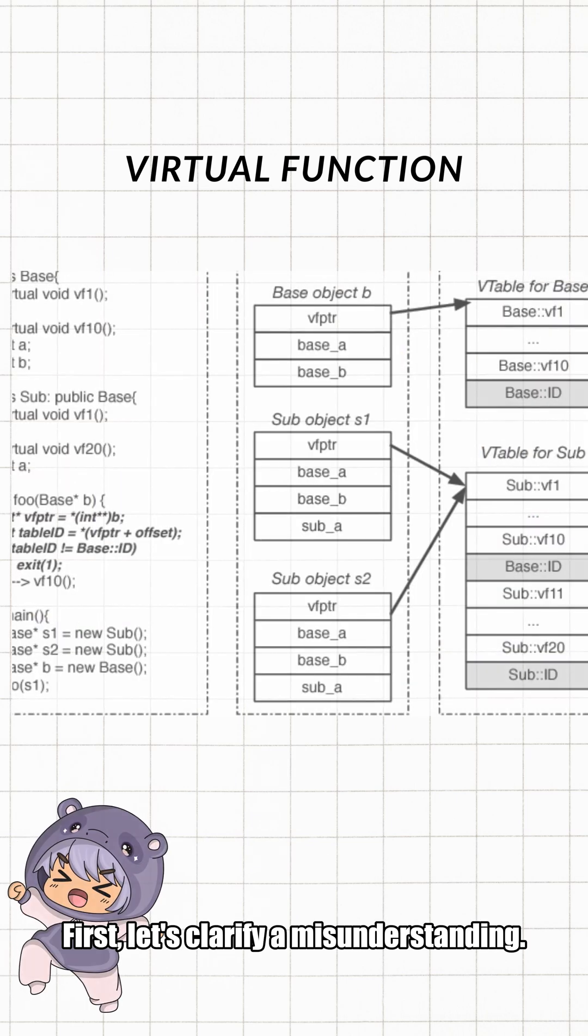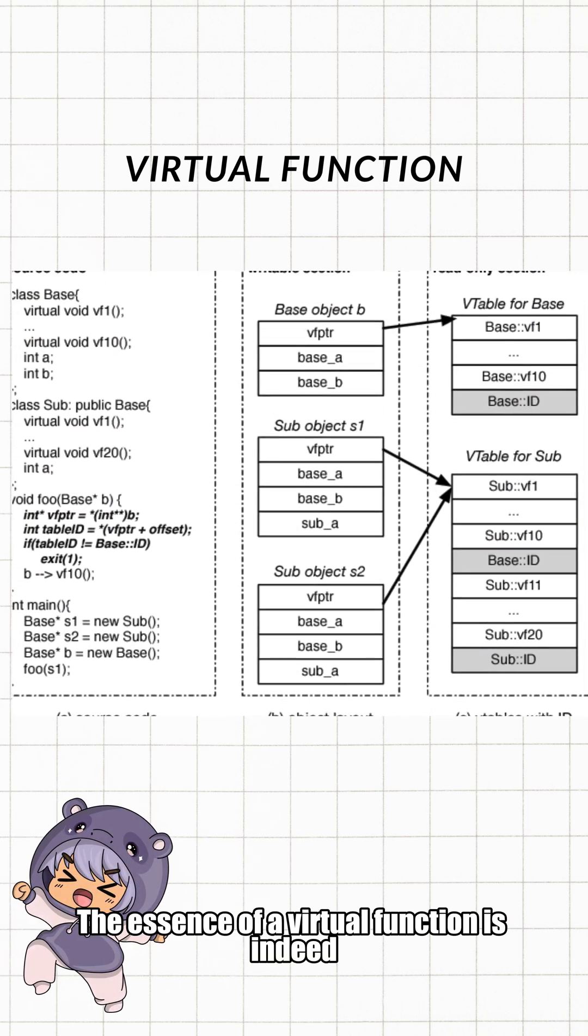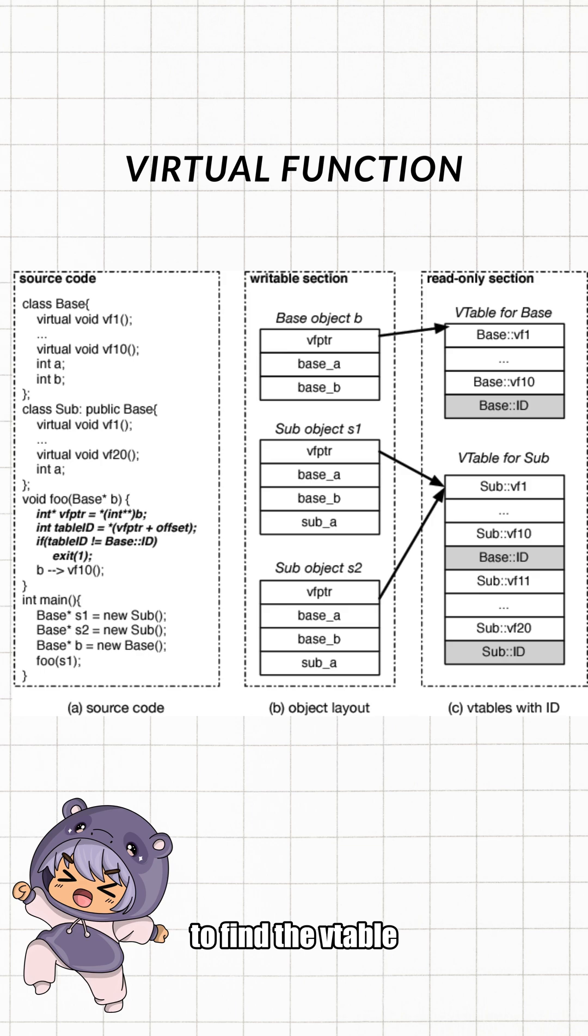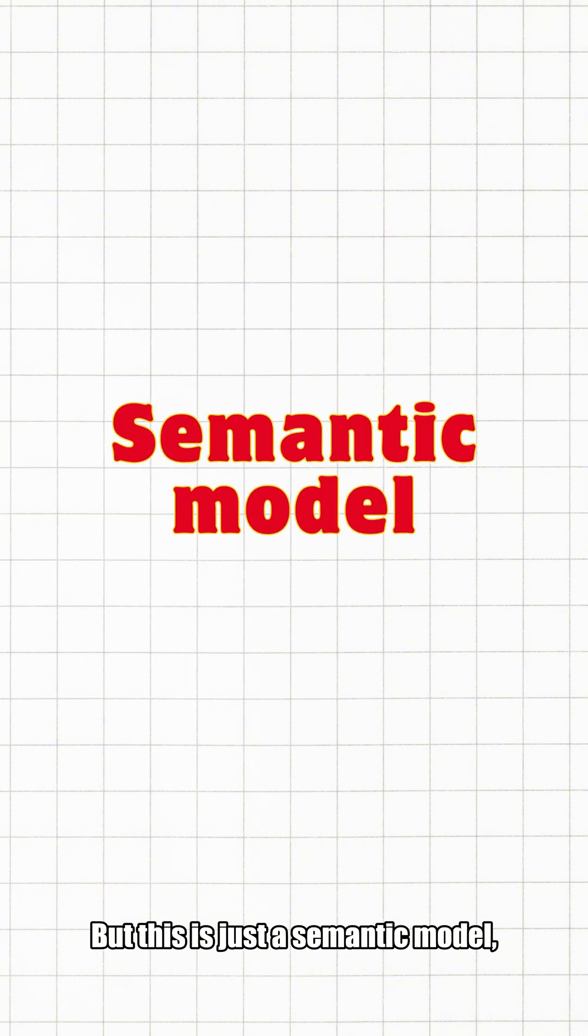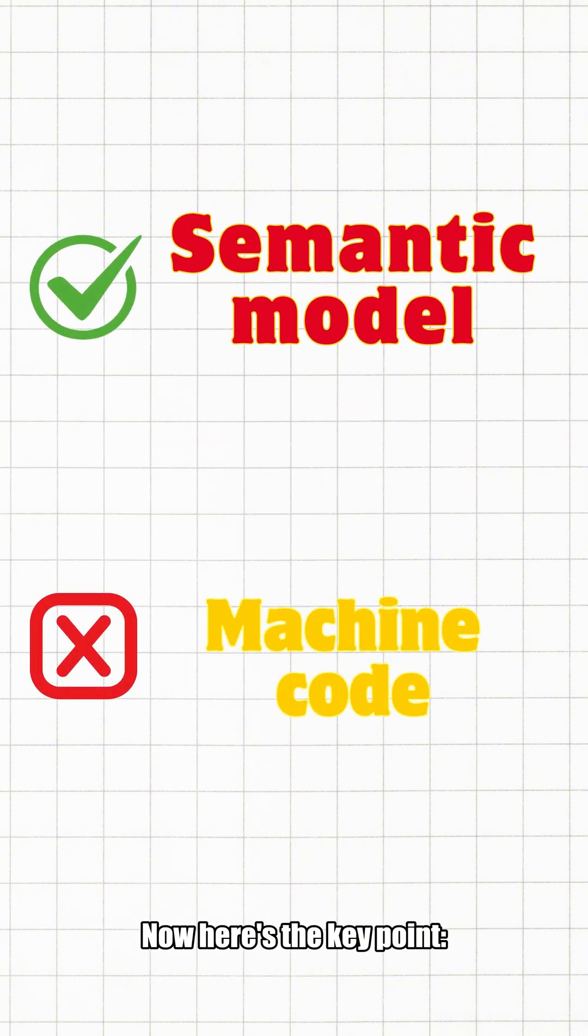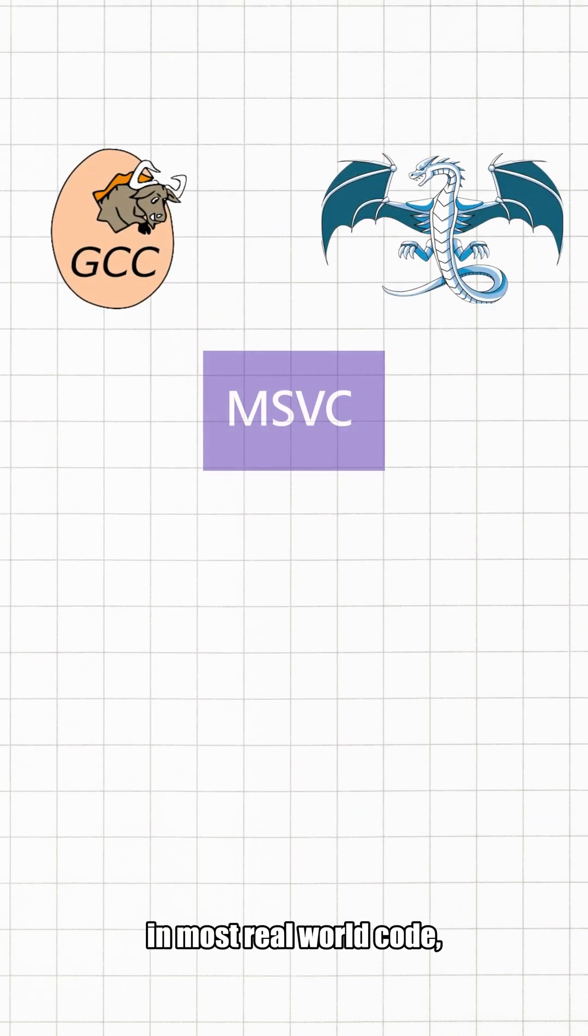First, let's clarify a misunderstanding. The essence of a virtual function is indeed to find the vtable through the virtual table pointer in the object and then indirectly call the function pointer. But this is just a semantic model, not the final machine code generated by the compiler.